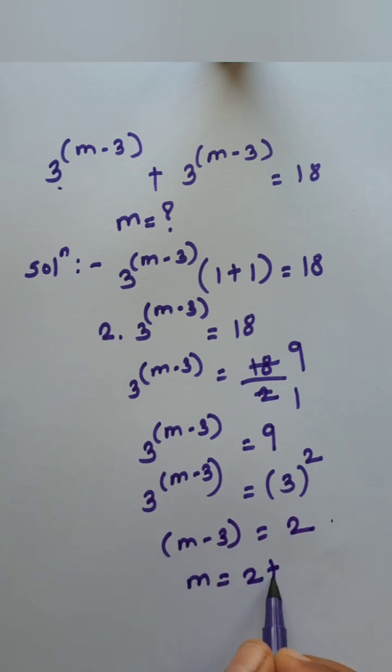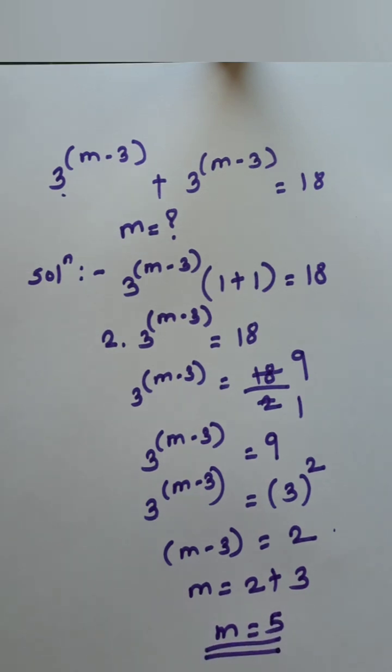m equals 2 plus 3 equals 5. m equals 5. This is our final answer.